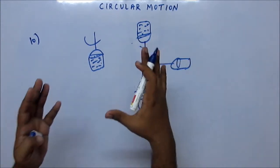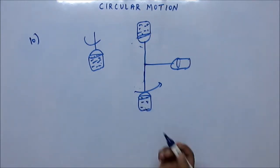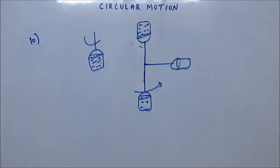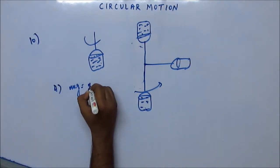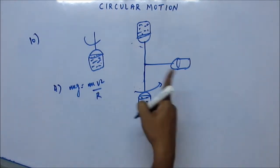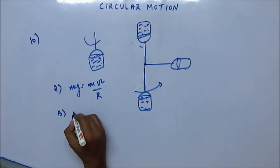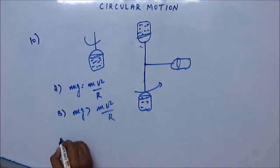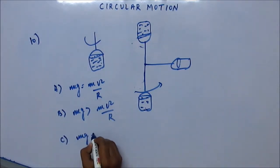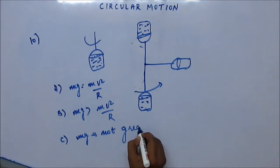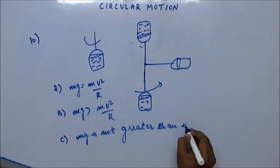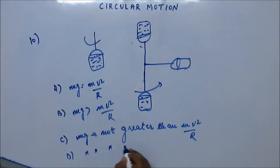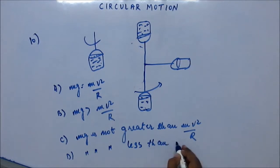At the top position, the bucket is upside down, but the water doesn't fall. Now here are the four options — option A: mg = mv²/r; option B: mg > mv²/r; option C: mg is not greater than mv²/r; option D: mg is not less than mv²/r. Read all options carefully and tell me which is correct.